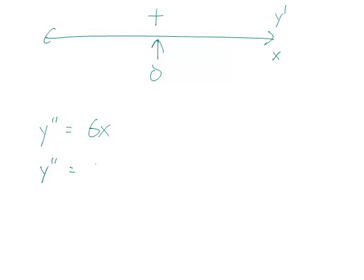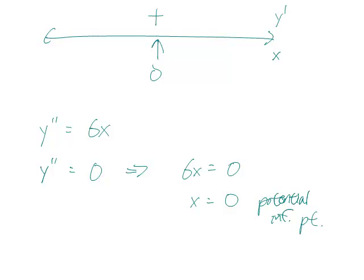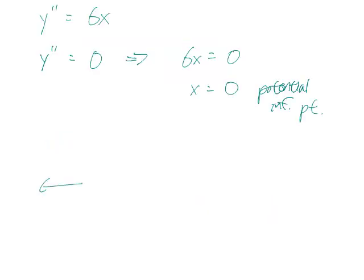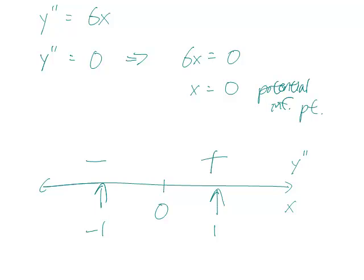Let's look at all the candidates for inflection points. That means y double prime equals 0, which means x equals 0, so this is a potential inflection point. We don't know if it is one yet, but we can check by drawing a sign chart with y double prime. 0 separates the sign chart, and plugging in a positive and a negative number shows it's negative with negatives and positive with positives — so it's concave up on the right and concave down on the left.